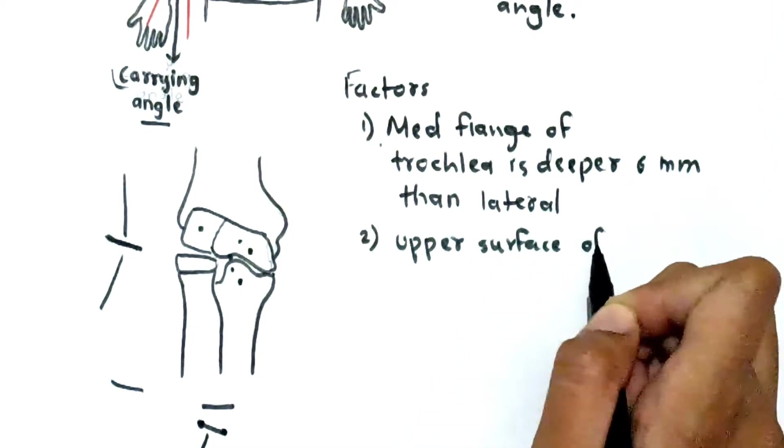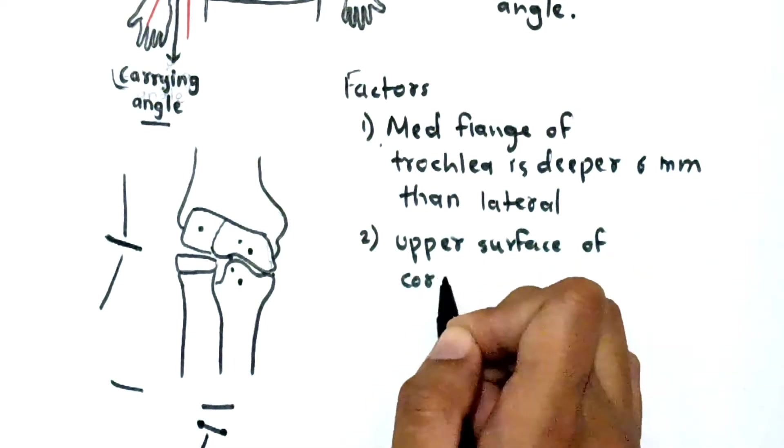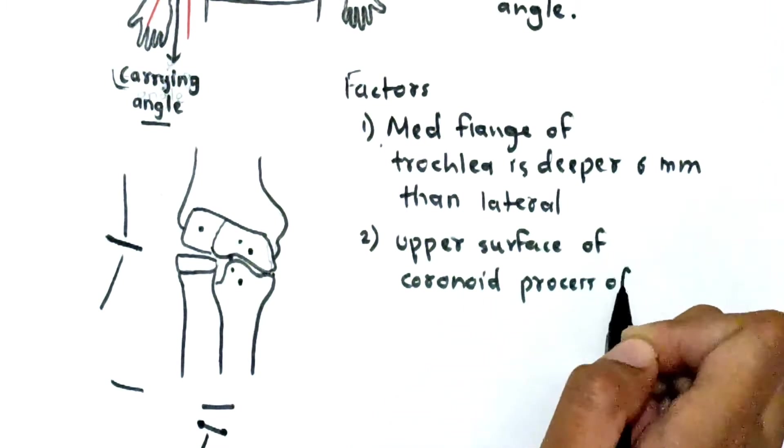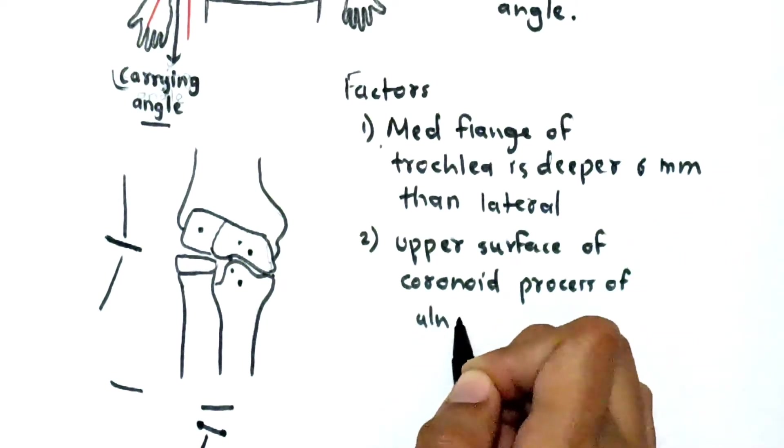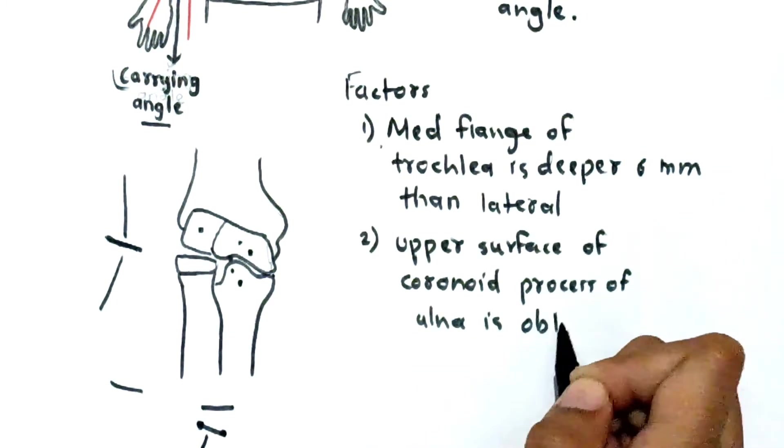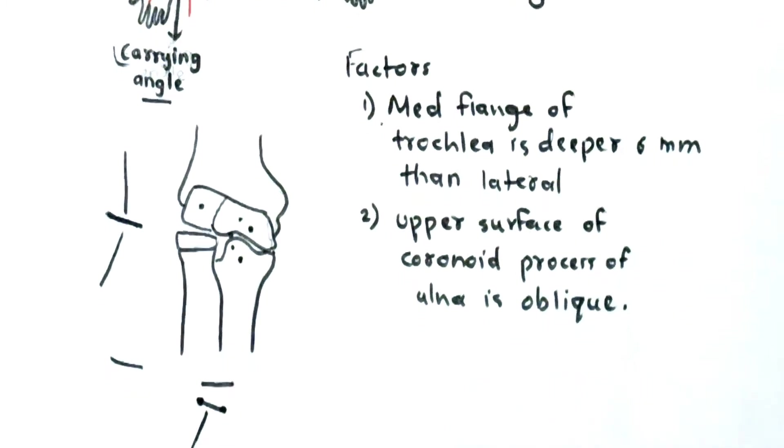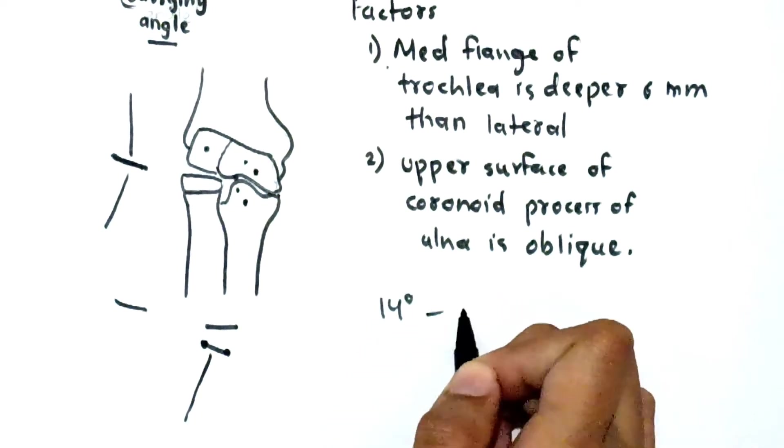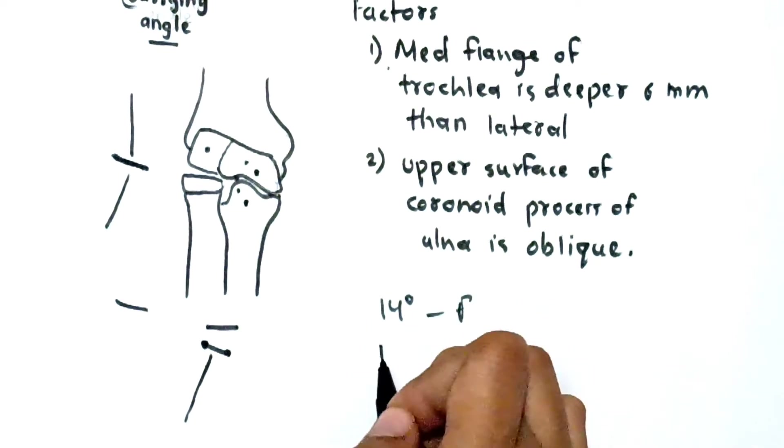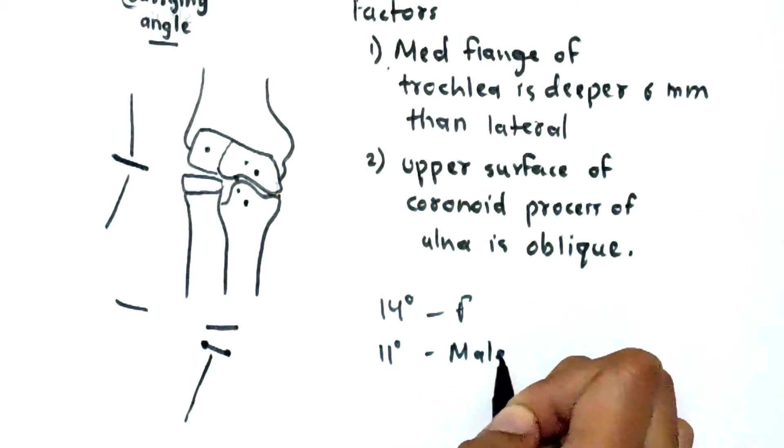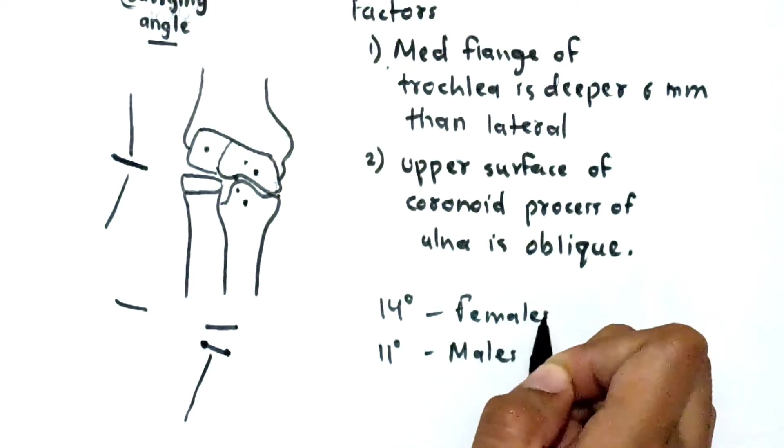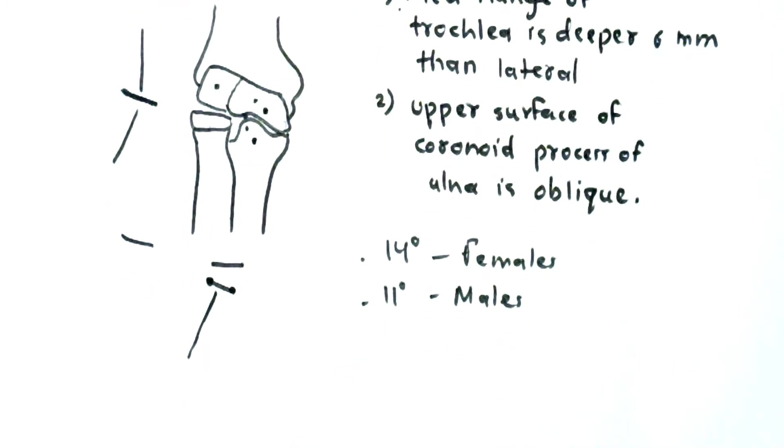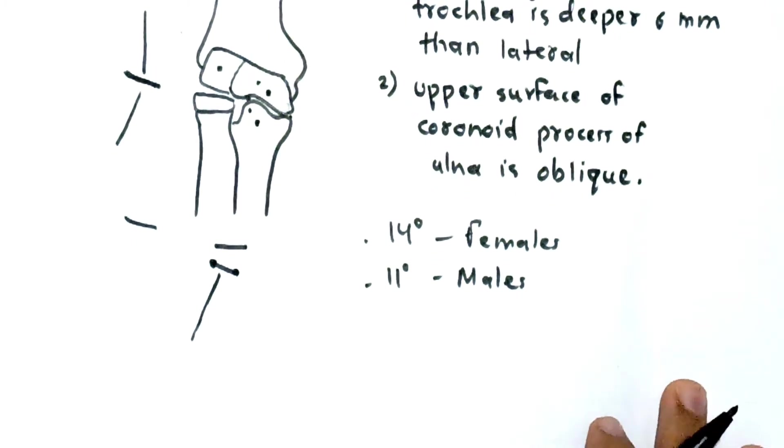The upper surface of coronoid process of ulna is also oblique. So this angle is 14 degrees in females and 11 degrees in males.